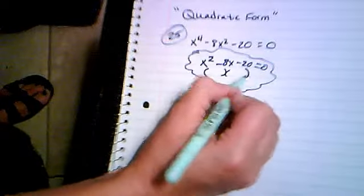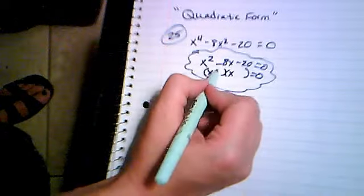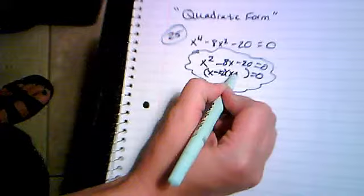And what we do here when we set up these things, whatever our middle thing was, that's what goes in that first spot. Same idea. Now we have minus 10 and plus 2, and we're going to work from there.